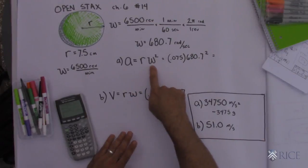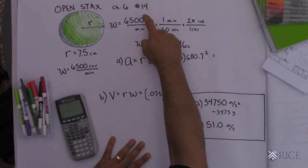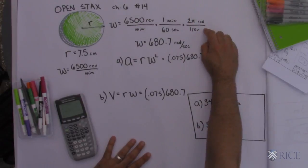In order to use that omega I had to put it in radians per second. So the first thing I did, I took the 6,500 revolutions per minute that they gave me, converted that into radians per second.